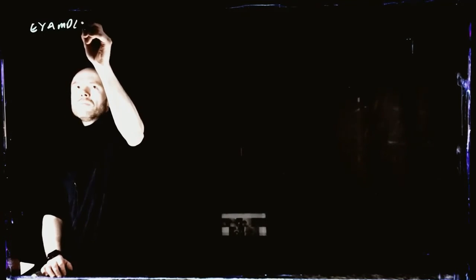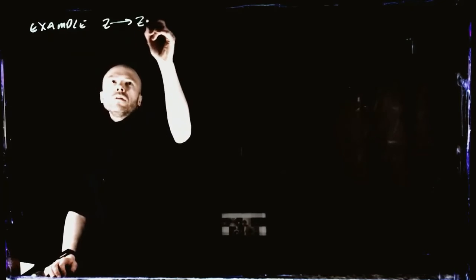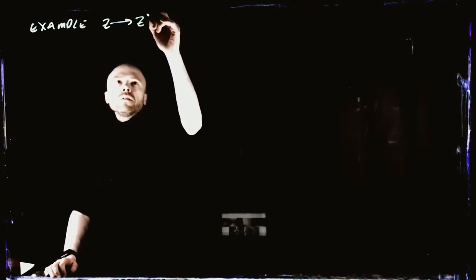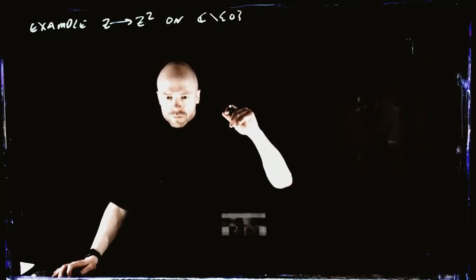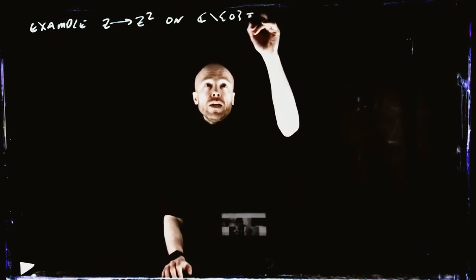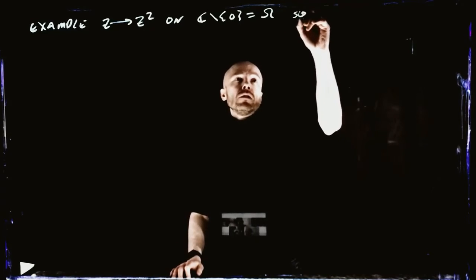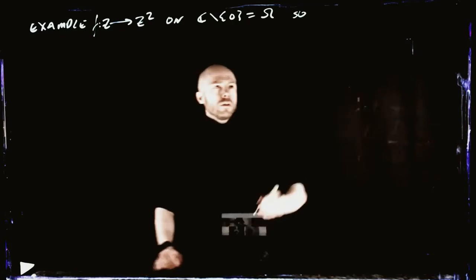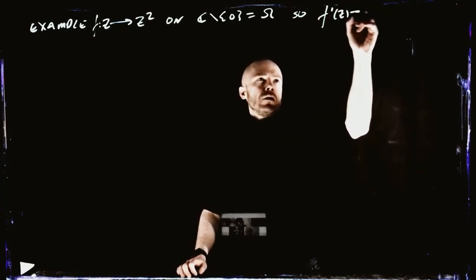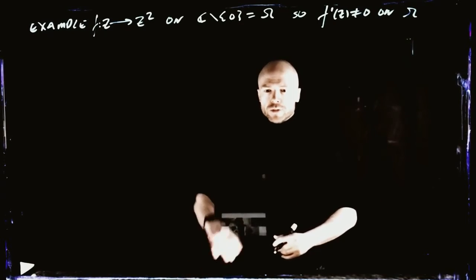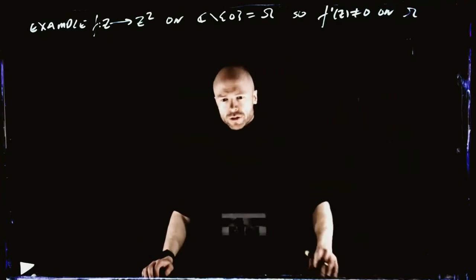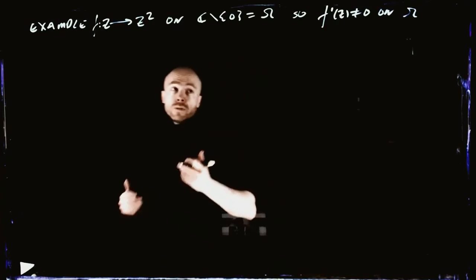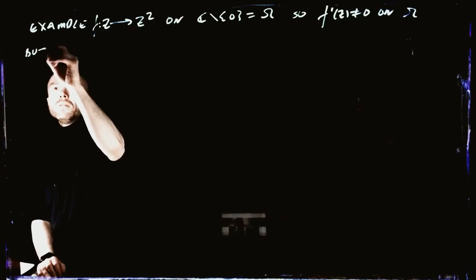Simple example would just be z goes to z squared on the complex numbers take away zero. So this thing has non-zero derivative on this open set Omega. Let's call that F. But it's very much non-injective. It's wrapping around two times. Every single point on the image has exactly two pre-images. So, non-injective.